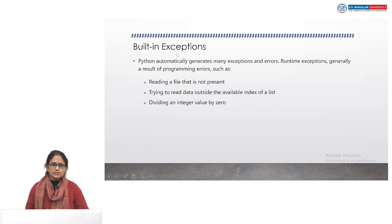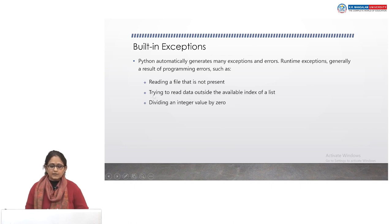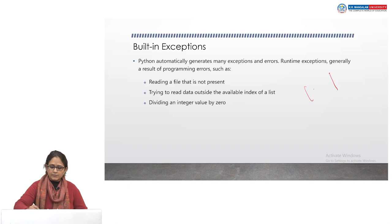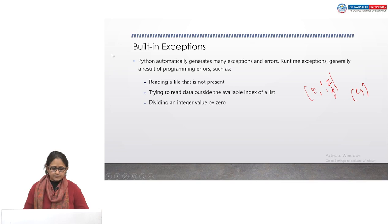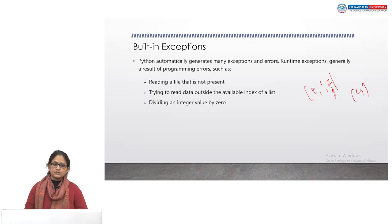When a Python script raises an exception, it must either be handled appropriately, otherwise your program will be terminated abnormally. Some built-in exceptions in Python include: reading a file that is not present — if you are trying to read or write into a file that does not exist, you may face an exception. Trying to read data outside the available index of a list — if the index is up to 2 and you try to access the fourth index, you may generate an exception. Dividing an integer value by 0 will also cause an exception. Mathematical errors may lead to generation of certain kinds of exceptions.